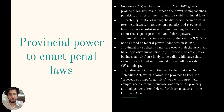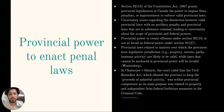To wrap up, the provincial power to enact penal laws in Canada is derived from Section 92(15) of the Constitution Act. While this power is significant, it is not as wide-ranging as the federal power under criminal law. Provincial laws that pertain to matters falling within provincial jurisdiction are more likely to be valid. The courts play a crucial role in determining the constitutionality of provincial laws, taking into account their primary purpose and their relationship to federal jurisdiction.